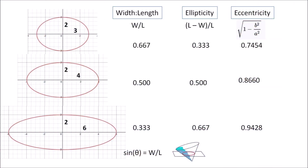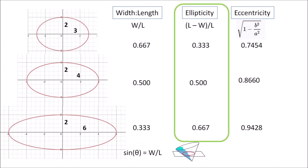There are several ways of describing an ellipse, but they all can be correlated. The width-to-length ratio characterizes the dimensions of an ellipse; the value approaches 1 as the shape becomes circular and decreases toward 0 as the ellipse becomes elongated. The ellipticity, defined as length minus width divided by the length, is equal to 1 minus the width-to-length ratio. It is 0 for a circle and increases toward 1 as the ellipse is stretched.